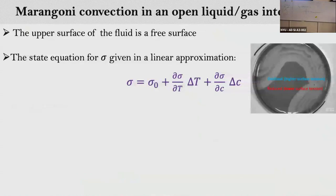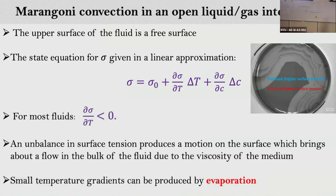Surface tension variation can come from two contributions: a temperature gradient or a chemical gradient. Experiments show that the reduced state of metal ions has a different surface tension than the oxidized state, so surface tension in the red area is lower than in the oxidized state, driving surface flows. For most fluids, surface tension variation with temperature is negative, and these surface flows can also drive bulk flows inside the system.